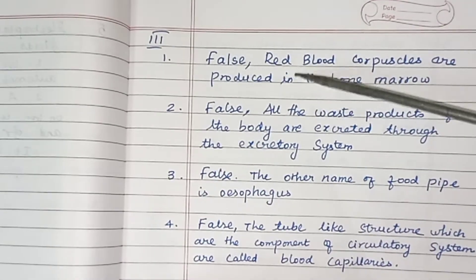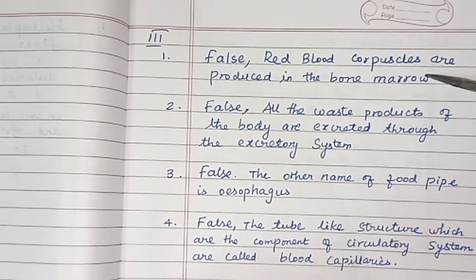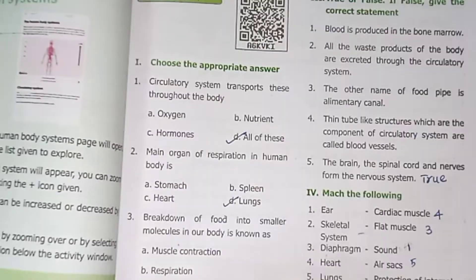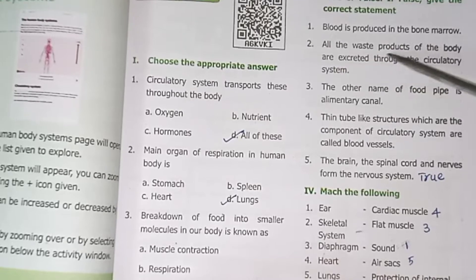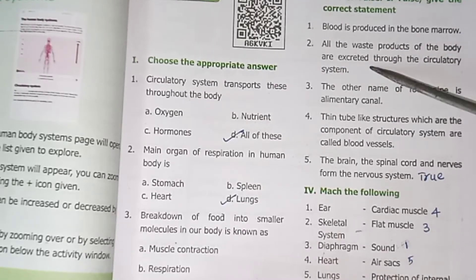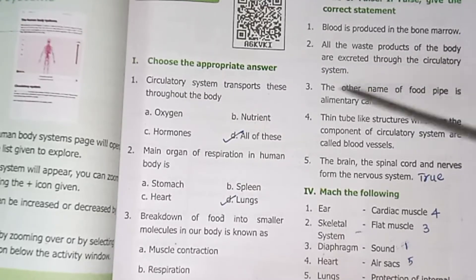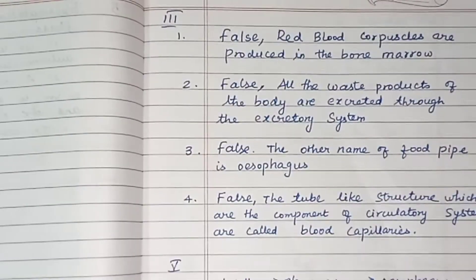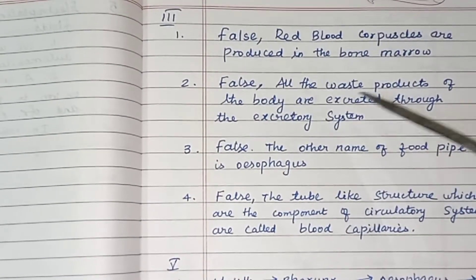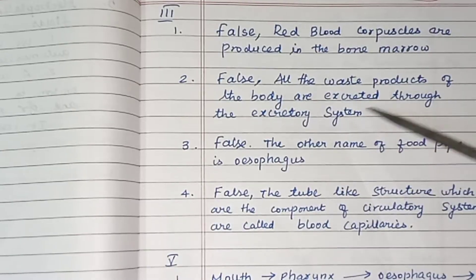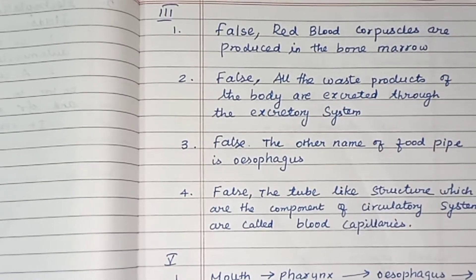True or False: Red blood corpuscles are produced in the bone marrow — True. All the waste products of the body are excreted through the circulatory system — False. All the waste products of the body are excreted through the excretion system.